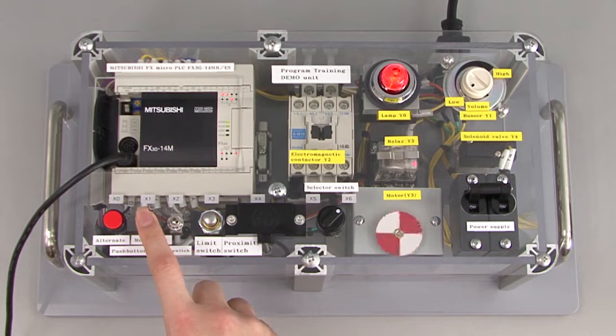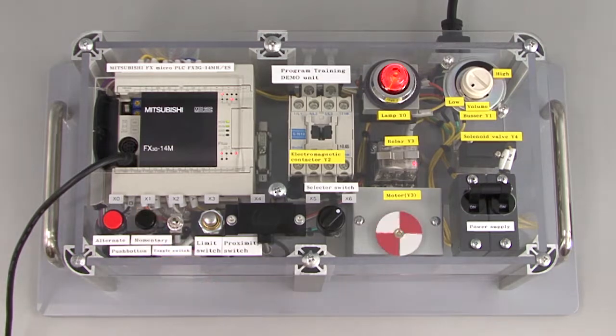Now let's check the operation. x1 was assigned as the entrance sensor. So press x1, and the red lamp will turn on and the motor will start.